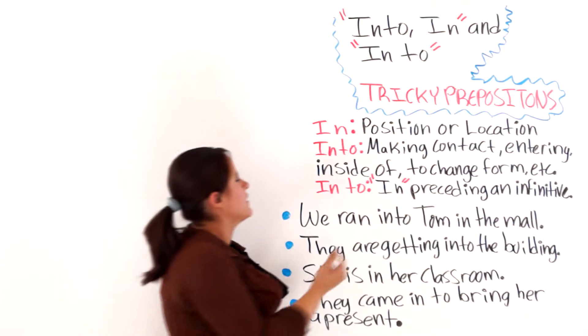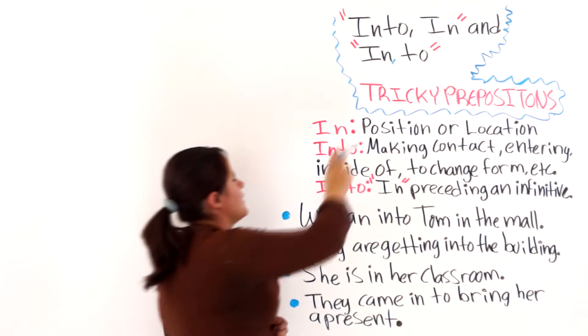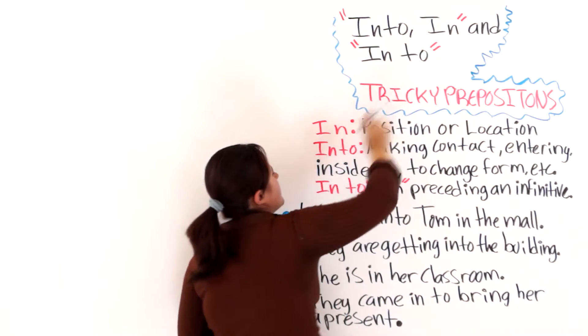Alright? Well, actually, this here is a preposition IN plus an infinitive. Alright? So don't get confused with that one.